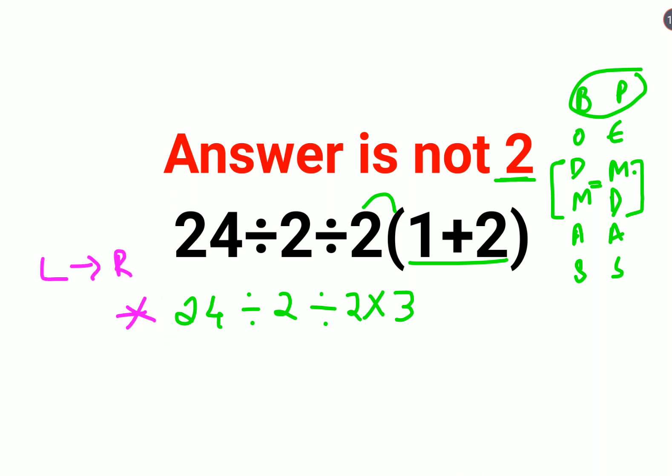This is something which is followed universally. So first you will do 24 divided by 2, that is 12, divided by 2, that gets you 6.